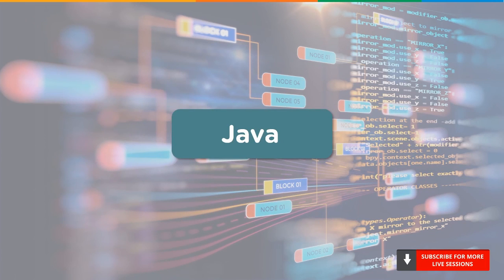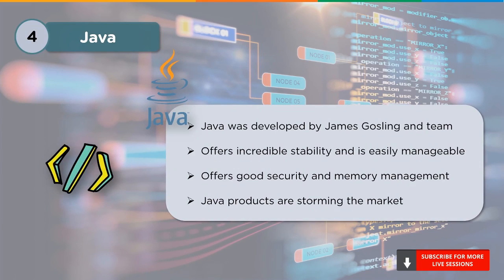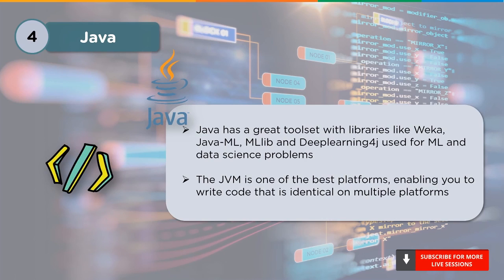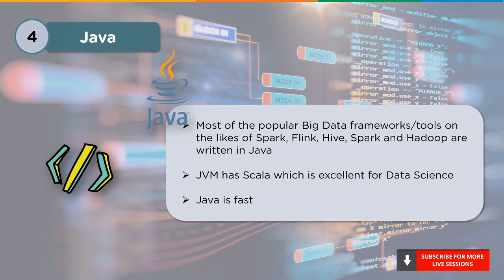The next commonly used language is Java. More than 3 billion mobile phones use Java today. Some salient features include incredible stability, excellent memory management, and good security. Libraries like Weka, Java ML, MLlib, and Deep Learning 4J are used for machine learning and data science problems. Java Virtual Machine is one of the best platforms to learn and write code. Popular frameworks like Spark, Big Data Hadoop, Flink, and Hype are written in Java. Java has Scala, which as we discussed is good for data science, and it is incredibly fast — Java has time and again proven useful across all aspects of growing technologies.